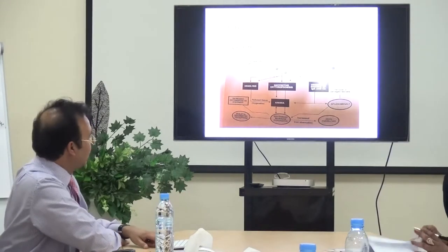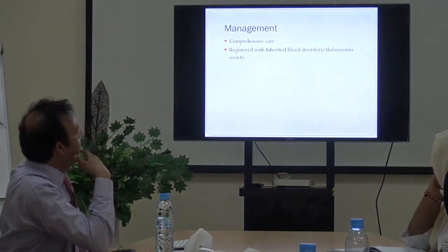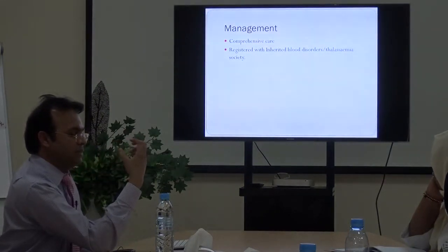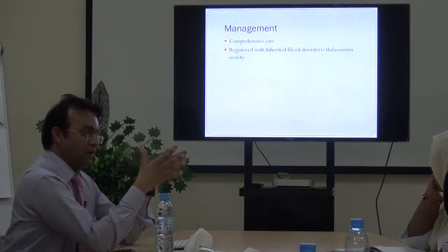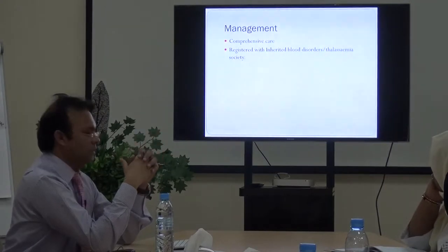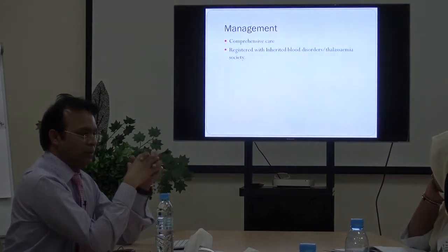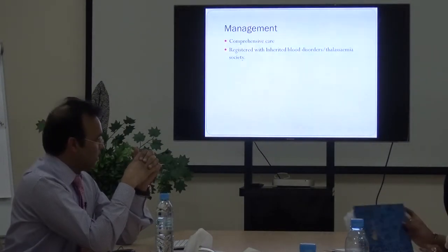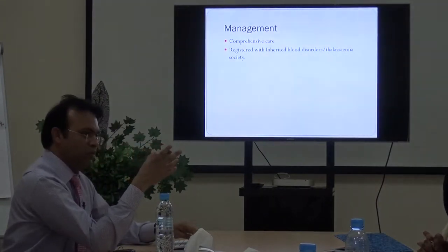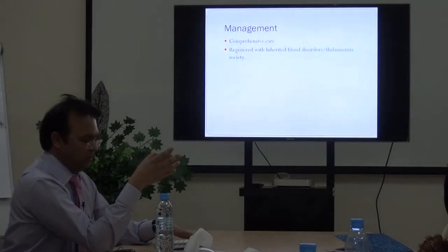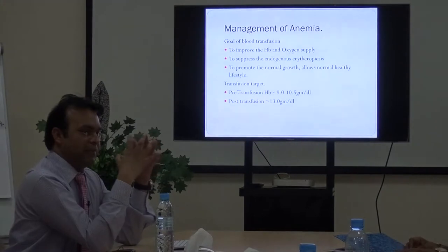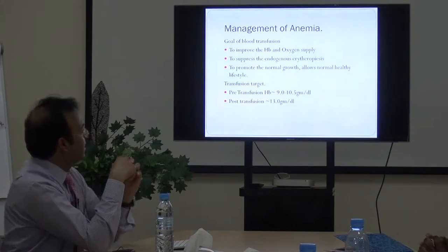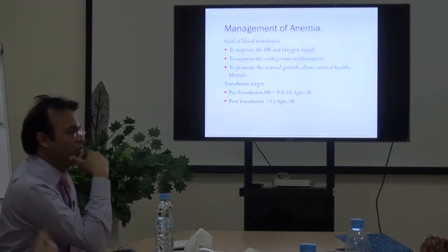The key component of thalassemia management requires a dedicated comprehensive care unit, ideally a thalassemia unit in major hospitals. Patients diagnosed with beta thalassemia major should be registered in the inherited blood disorder registry and at the institute where they receive transfusion support. At Royal Hospital we have two units — pediatric and adult — treating thalassemia patients with a database maintained. The major issue early in thalassemia is anemia, which needs to be tackled first.